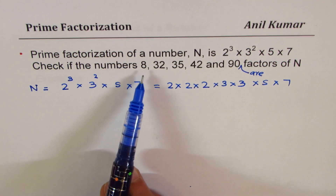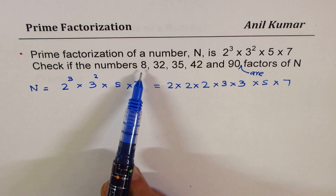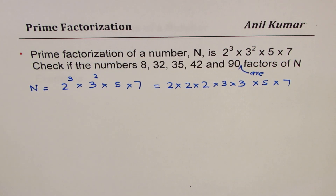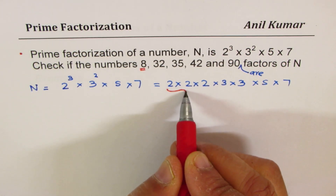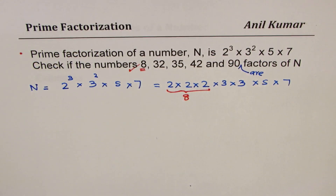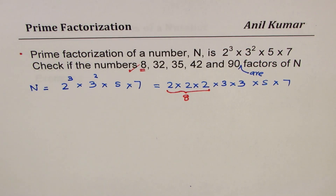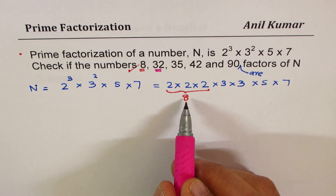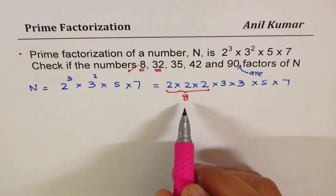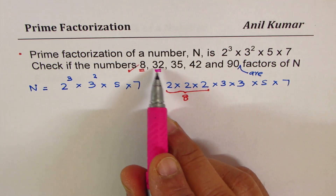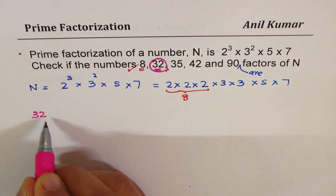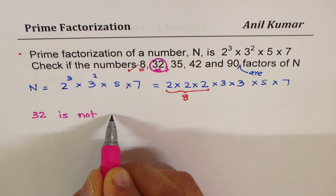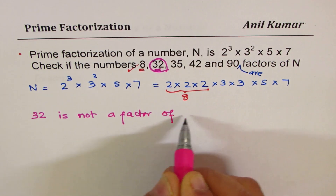We have to check if the factor 8 exists for n. 8 equals 2 cubed — this combination gives us 8, so 8 is a factor. Now let's see if we can get 32 as a factor. 8 times 4 would require more 2's, but we have already used all the 2's available. So we cannot make 32 with these numbers, and therefore 32 is not a factor of n.